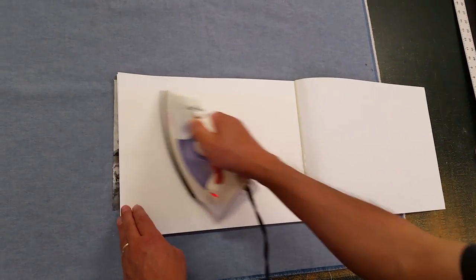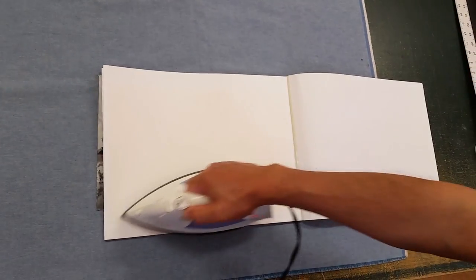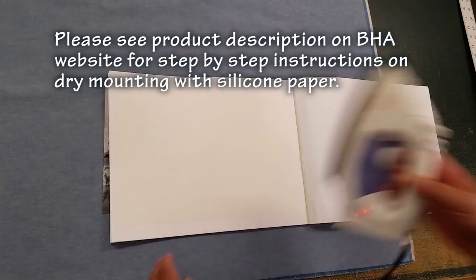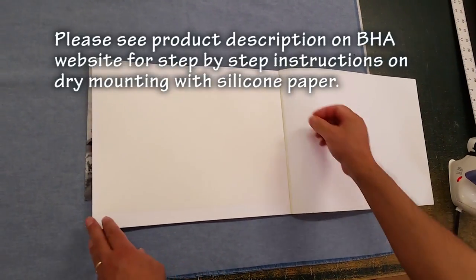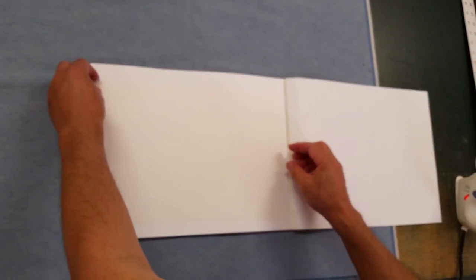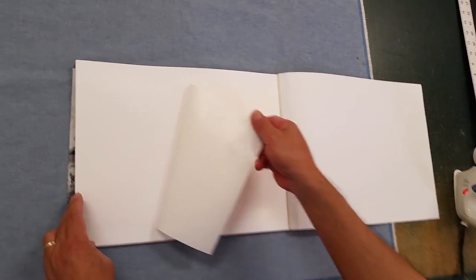This method I call method B. Method A is to mount directly on back of the painting, which is more challenging for most people. If you decide to mount the painting on a backing paper like this, a thick paper, you don't need to mount the painting first, but mount the backing paper first.